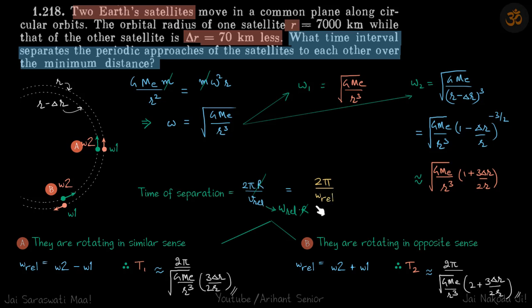And v relative we can write as omega 2 minus omega 1 into r, so r will get cancelled and time of separation will be 2 pi by omega relative. Now in the first case when they're going in the same sense, then omega relative is omega 2 minus omega 1. This will give the time period as this, just put the values of omega 2 and omega 1.